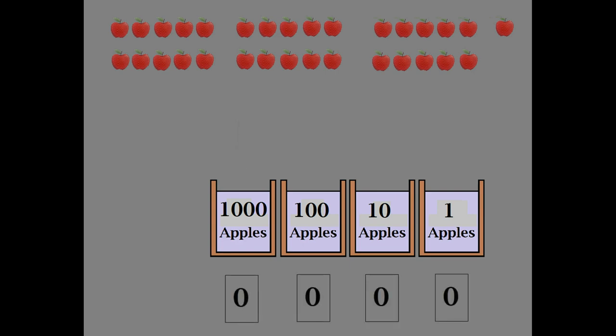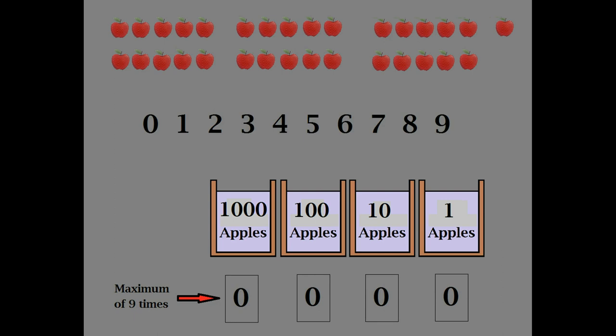We'll need to count how many times we fill each bucket. With the decimal system, the maximum number of times you can fill a bucket is nine times. We chose the number nine because the numbers zero through nine is ten different digits. Thus, the word decimal.